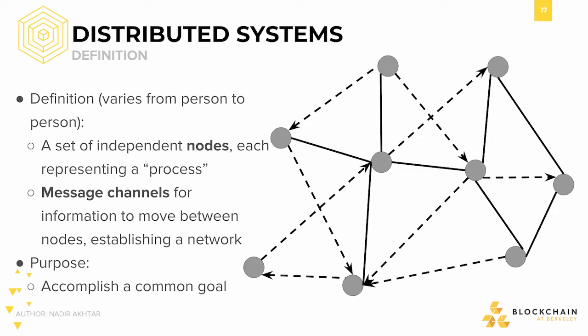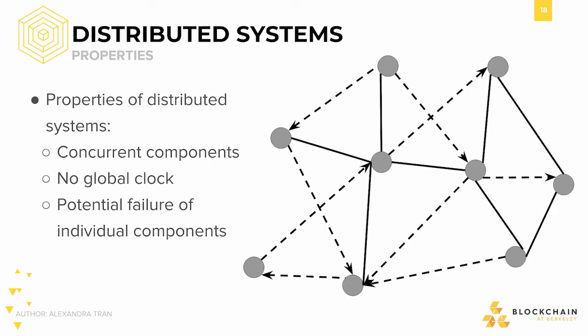Let's discuss the properties of a distributed system, keeping in mind the two main components to understand exactly what we're working with. One of the most obvious components is concurrency — components in the system process information concurrently, as opposed to a single process which operates one step at a time. Second, there is no global clock. While all nodes can attempt to stay synchronized, there is no single clock or computer to access for the current time. Each node is responsible for maintaining its own time. Time and its effect on the operation of a distributed system constantly comes up in heated debates across the academic world.